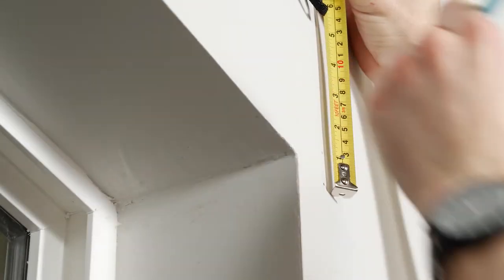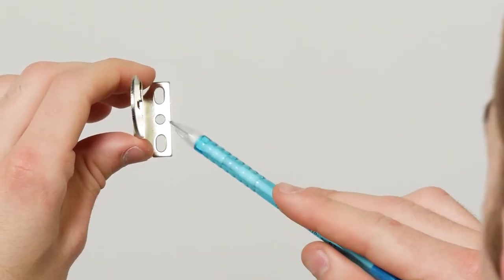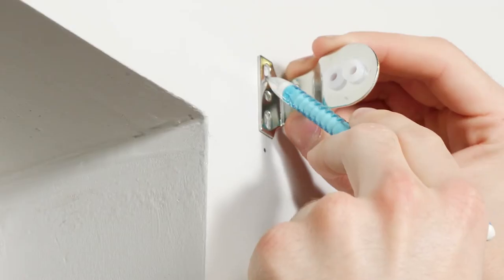From here, make another mark at least three quarters of an inch above your first marks. Center your brackets over the top marks and use a pen or pencil to mark where the two screws will go.